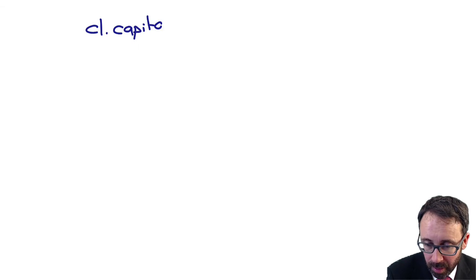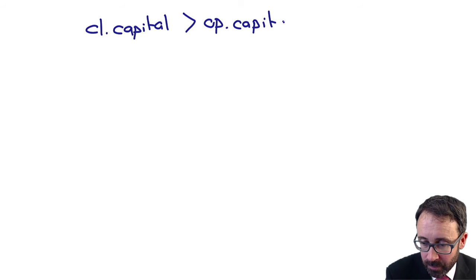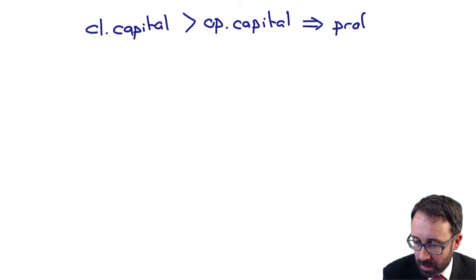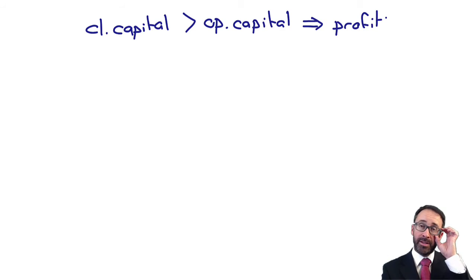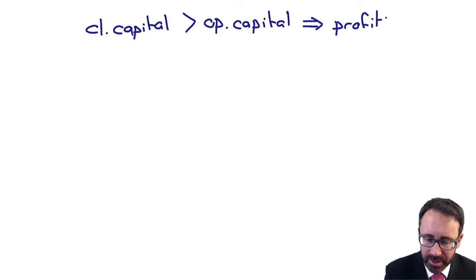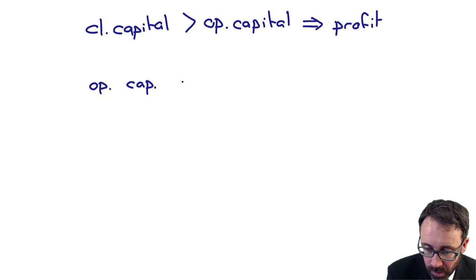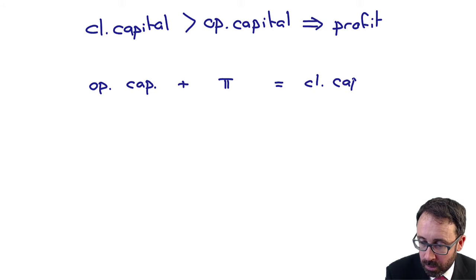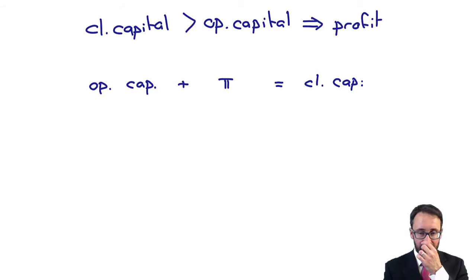What you've got in terms of capital being maintained is that if your closing capital is greater than your opening capital using the measurement basis we've seen in the previous sections, then after the distribution that you've made to the shareholders, you will have made a profit. That's the accounting equation, isn't it? Your opening capital plus your profit should equal your closing capital.